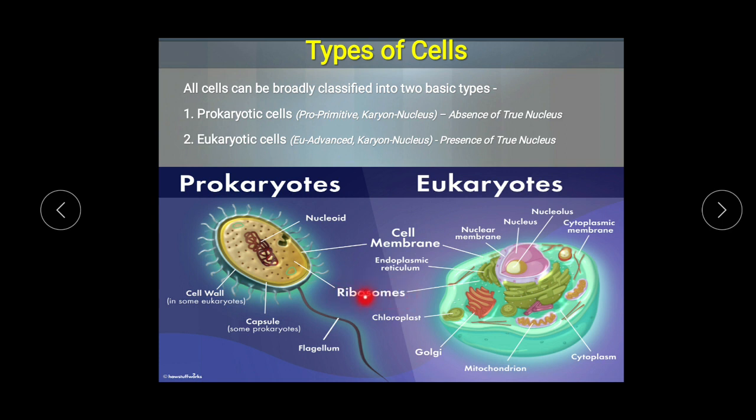Along with the cell membrane and cytoplasm, there is also the presence of ribosomes — these are cell organelles present in prokaryotes as well as eukaryotes, and they are important for protein synthesis. Ribosomes are the sites of protein synthesis.